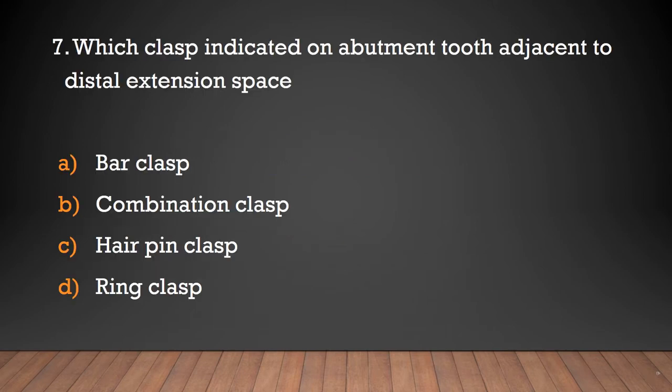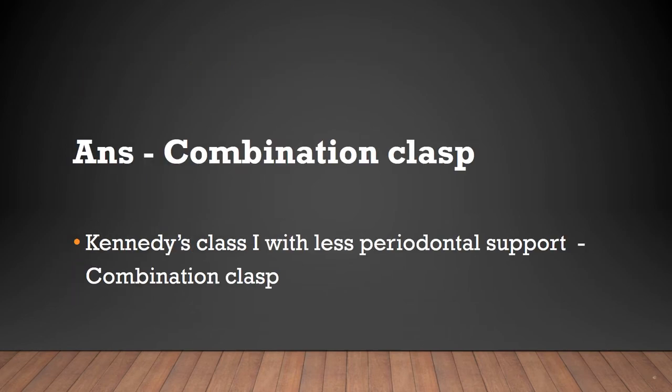Which clasp is indicated on an abutment tooth adjacent to distal extension space? Bar clasp, combination clasp, hairpin clasp, or ring clasp? The answer is combination clasp — combination clasp is also used in Kennedy's Class I with less periodontal support.